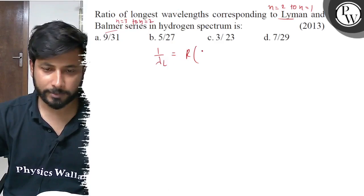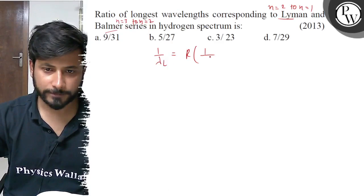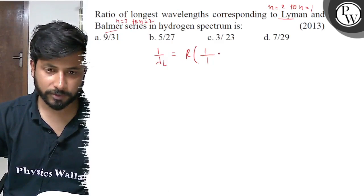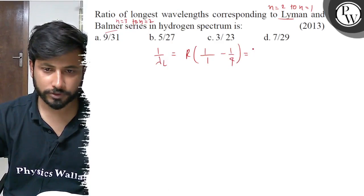So 1 by lambda equals to R, if we start with Lyman, then 1 by 1 minus 1 by 4, which equals 3R by 4.